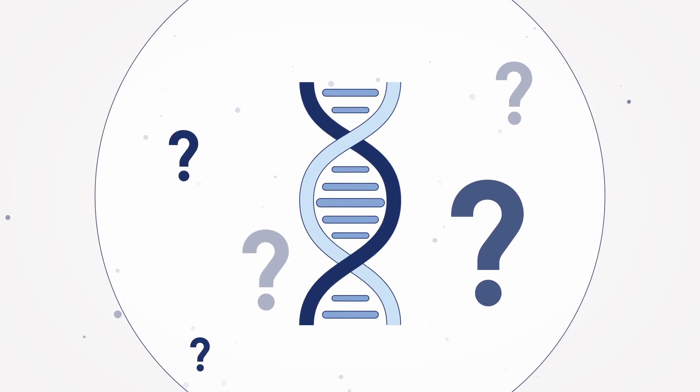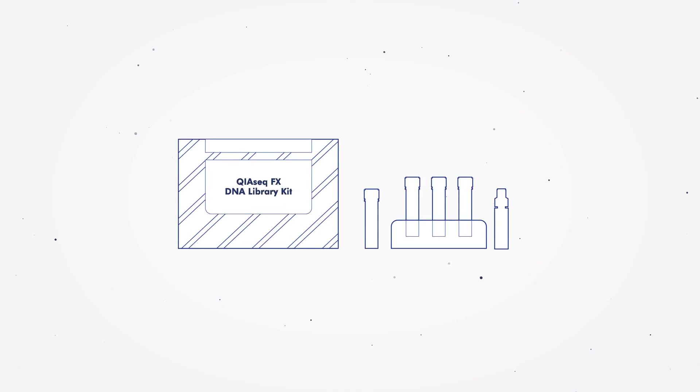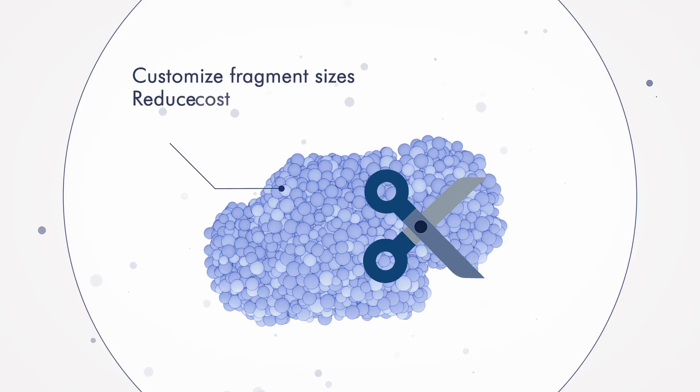So what can you do? The answer is to use fully enzymatic, nuclease-based DNA fragmentation. For example, in the QIAseq FX DNA Library Kit, fully enzymatic fragmentation of DNA allows complete customization of fragment sizes, reduced costs, and minimal sequence bias.